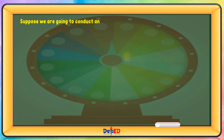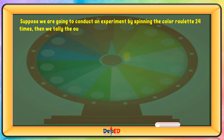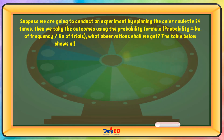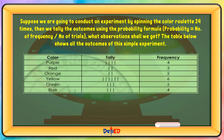Suppose we are going to conduct an experiment by spinning the color roulette 24 times. When we tally the outcomes using the probability formula — probability equals number of frequency over number of trials — what observations shall we get? The table below shows all the outcomes of this simple experiment.